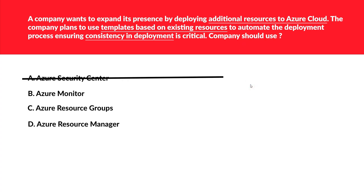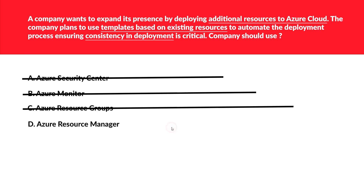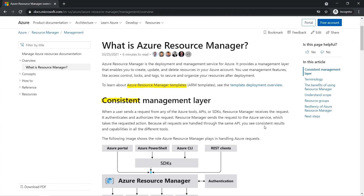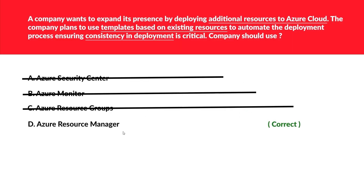The first option, Azure Security Center, does not provide automation resources or templates, so A is wrong. Azure Monitor is designed to collect, analyze, and act on telemetry data, so that is also wrong. Azure Resource Groups is again wrong because resource groups only provide a way to manage resources as a set. Azure Resource Manager — yes, this provides templates. Even in the documentation it is clearly mentioned: Azure Resource Manager templates, or ARM, and 'consistent' is one of the keywords. So Azure Resource Manager is the correct option.